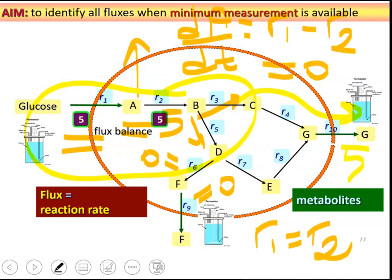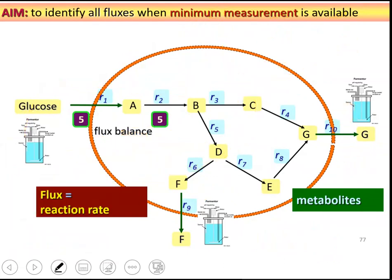The flux balancing. So the key point here is we can use minimum measurements to identify all fluxes in a given cell. We had a single measurement here, just glucose consumption rate. And we are given that in this specific condition, the cell doesn't produce any F.